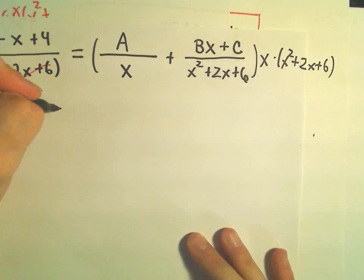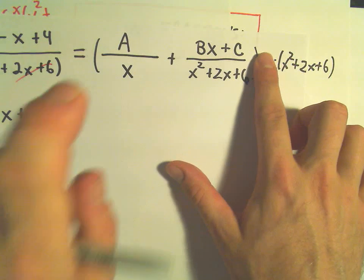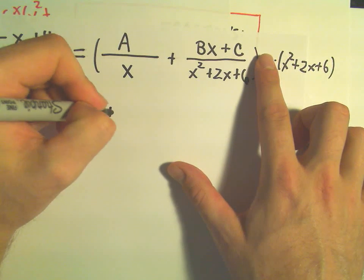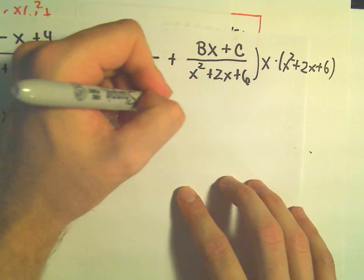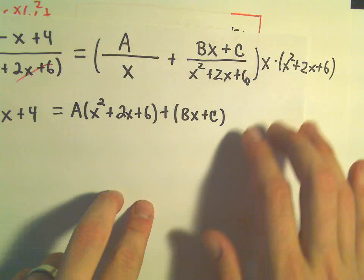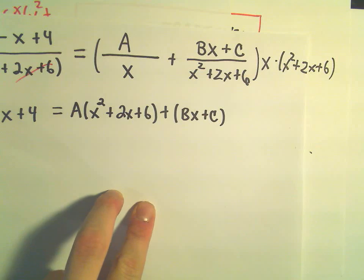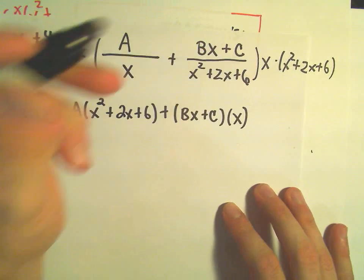So if I do that on the left side, well, they all cancel out, just like in the other examples. And we're just going to be left with our 3x² - x + 4. Well, if I do it on the left side, I've got to multiply it out on the right side as well. So on the right side, again, I'm going to multiply by x times (x² + 2x + 6). So if I do that, when I distribute all this to the first term, the x's would cancel. So we would have A times (x² + 2x + 6). And then we've got in parentheses Bx + C. Again, if we multiply all this stuff to that term, the x² + 2x + 6 would cancel. And we would just be left with (Bx + C) times x.